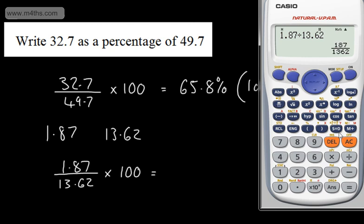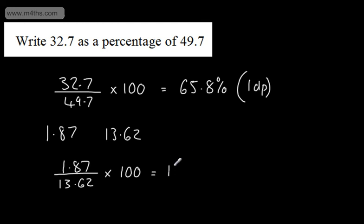That's going to give me now 0.137 and so on and so forth. Multiplying it by 100 will give us 13.7. So 13.7% and that again is correct to one decimal place.